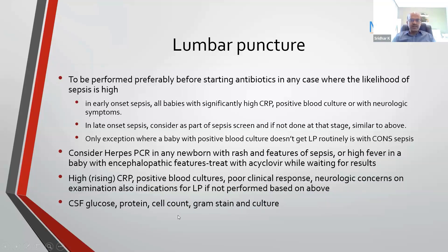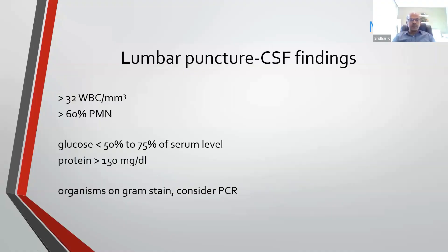We look at the CSF glucose, protein, cell count, as well as gram stain and culture, and herpes PCR can be done. Rapid PCR can detect different bacteria in addition to viral PCR, which can guide your antibiotics. CSF findings: if the WBC is more than 32, especially if polymorphs are more than 60%, it becomes more significant. You allow up to five to six polymorphs in newborns. The glucose is usually less than 50 to 75% of the serum level, and protein is more than 150. If you have organisms on the gram stain, it correlates, and consider PCR if possible.